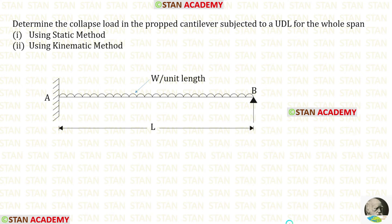Hello everyone. Today we are going to find the collapse load in a propped cantilever beam when it is subjected to uniformly distributed load for the whole span. We are going to use two methods: the static method and the kinematic method.